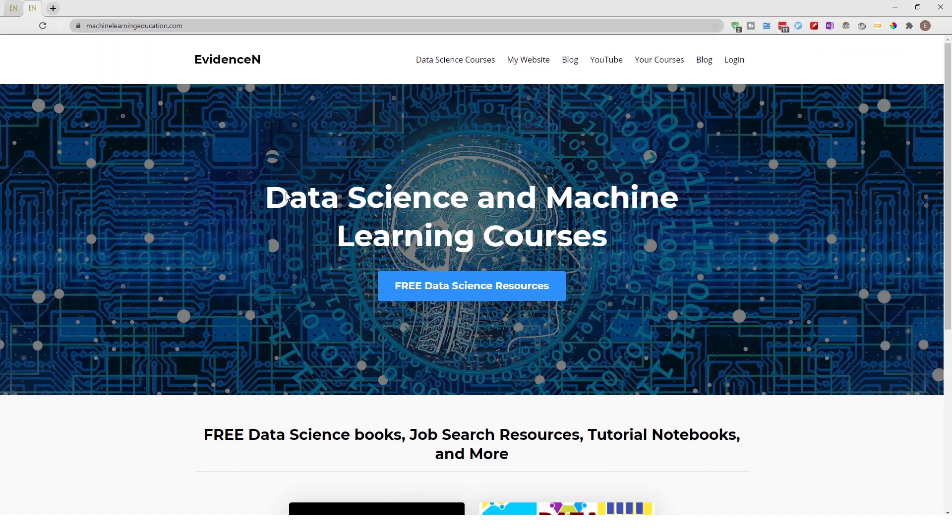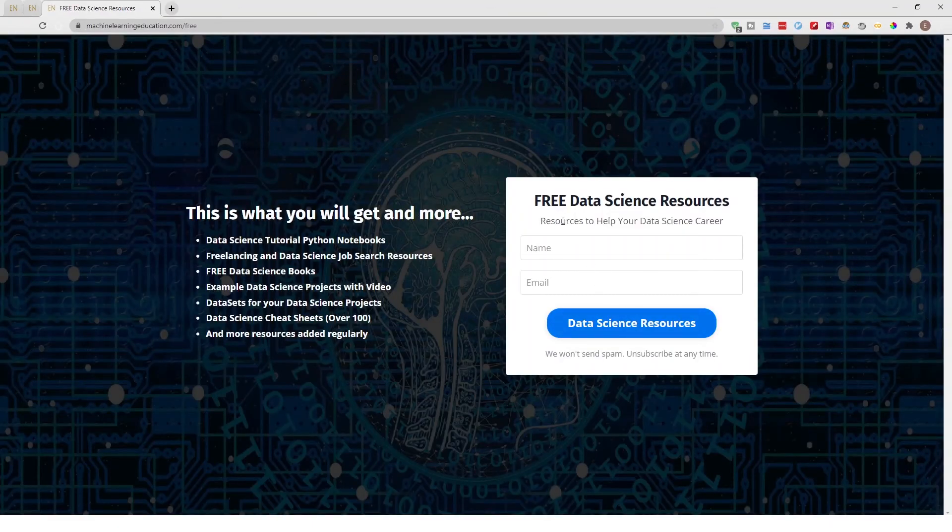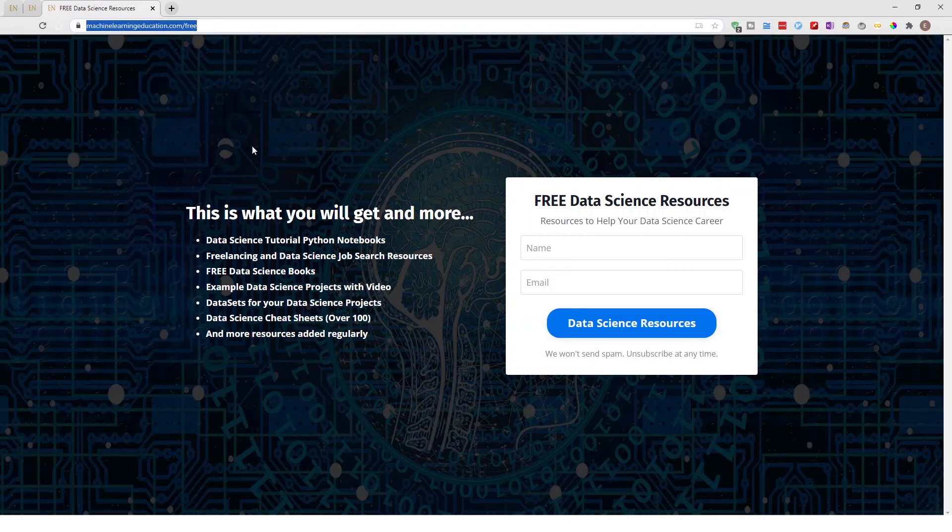You can get the PowerPoint slide used in today's video by going to machinelearningeducation.com. And once you are here, you can click on free data science resources and you'll be able to get access to this page. And through this page, you'll be able to get access to this PowerPoint that I used in today's video. And that website, again, is machinelearningeducation.com/free.